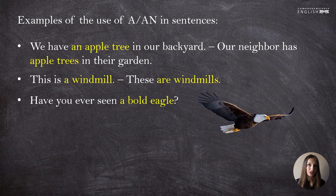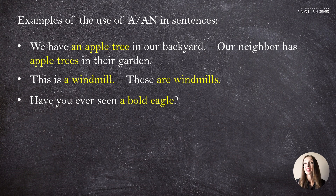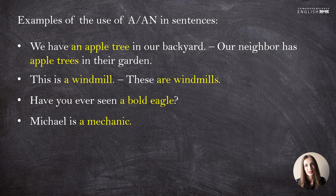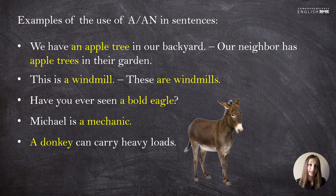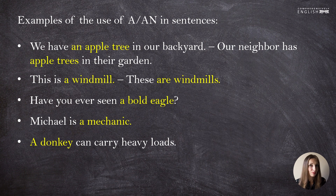'Have you ever seen a bald eagle?' — eagle is a countable, singular noun. When we speak about something theoretically, we use the indefinite article. 'Michael is a mechanic' — when introducing professions, we also use 'a' or 'an.' 'A donkey can carry heavy loads' — here we are talking about a representative of a group of animals, so we use 'a.'